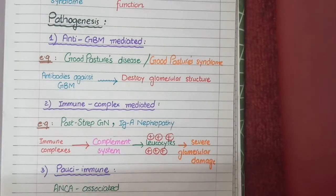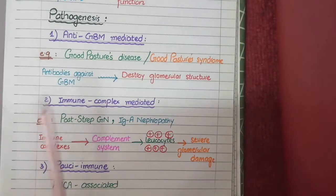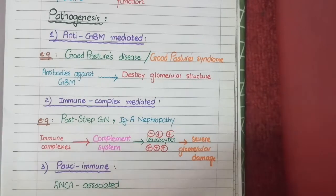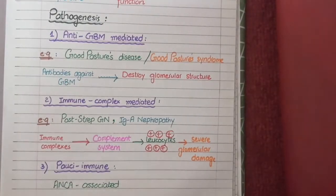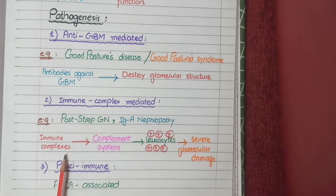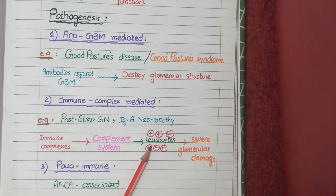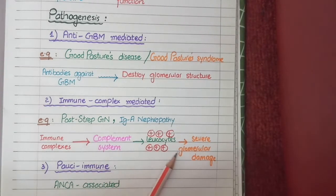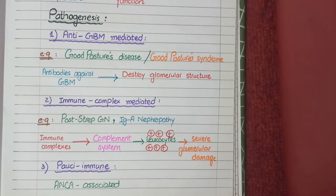The second category is immune complex mediated glomerulonephritis. Several categories of glomerulonephritis are mediated by immune complex mechanisms. For example, in post-streptococcal glomerulonephritis or IgA nephropathy, immune complex deposits get deposited in the kidney and cause activation of complement proteins. Once the complement system is activated, it causes recruitment of leukocytes, and these leukocytes cause glomerular endothelial damage resulting in nephritic syndrome. If the damage to glomeruli is so extensive that it causes rapid decline in renal function, we classify it as rapidly progressive glomerulonephritis.